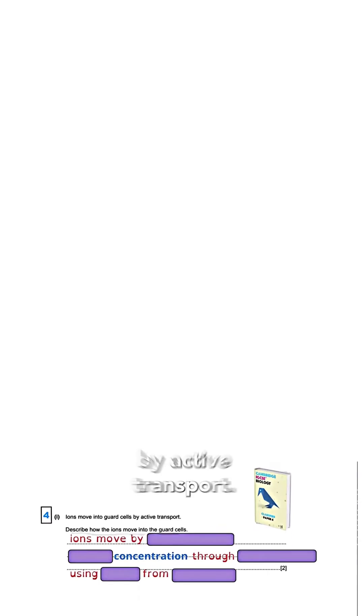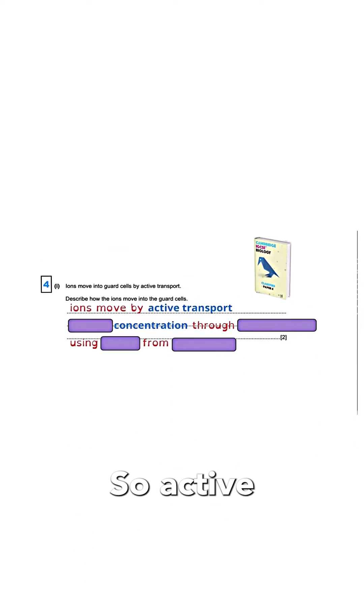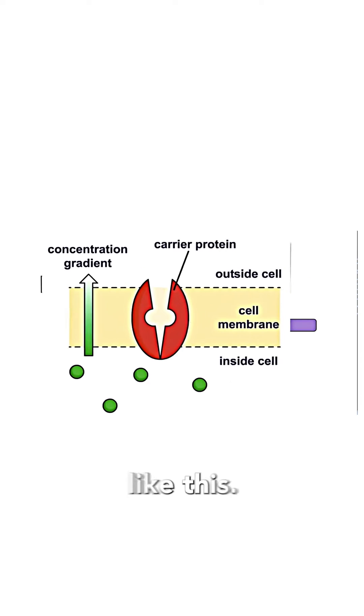Describe how ions move into the cells by active transport. So active transport is what? That's when ions move against concentration gradient. They're going to have to use something like this.